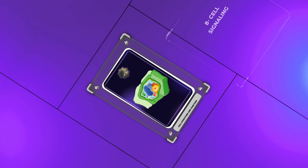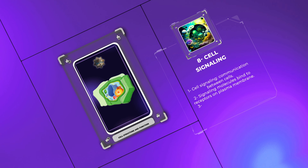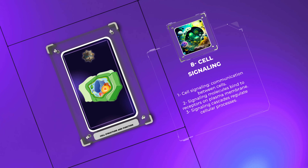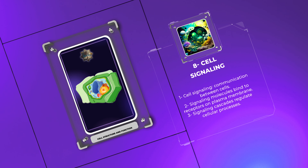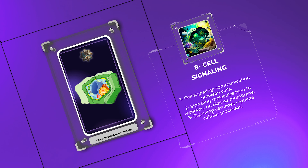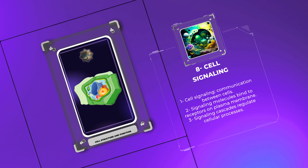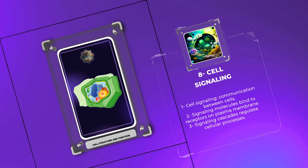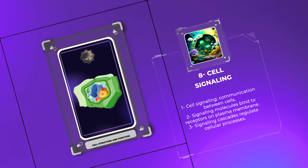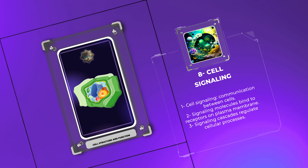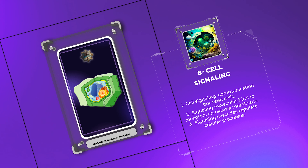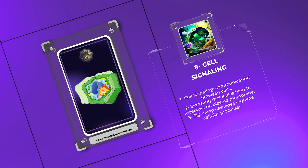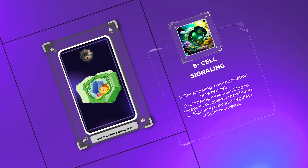Cell signaling enables cells to communicate with each other and respond to external stimuli efficiently. Signaling molecules, such as hormones or neurotransmitters, bind to specific receptors on the plasma membrane, triggering intracellular signaling cascades. These cascades regulate various cellular processes, including growth, differentiation, and survival.